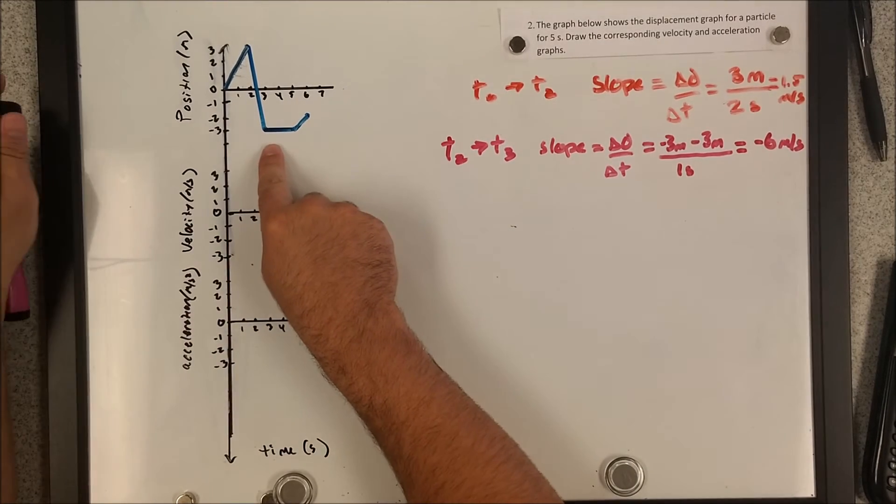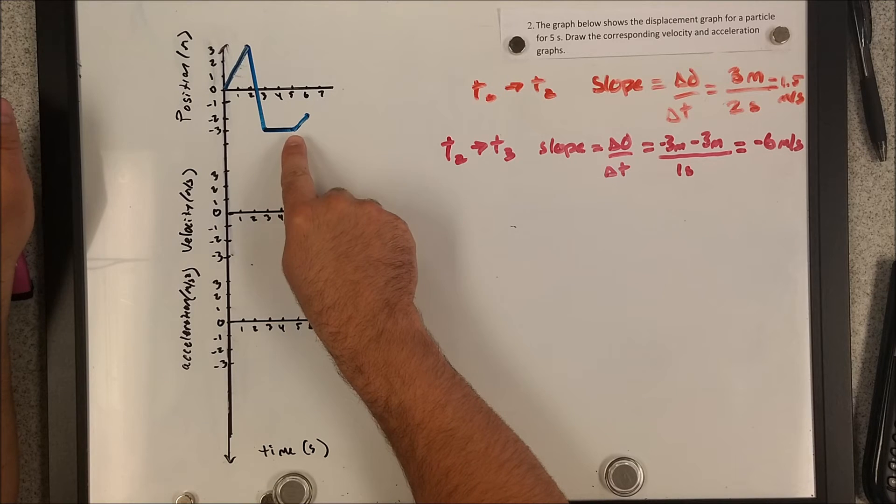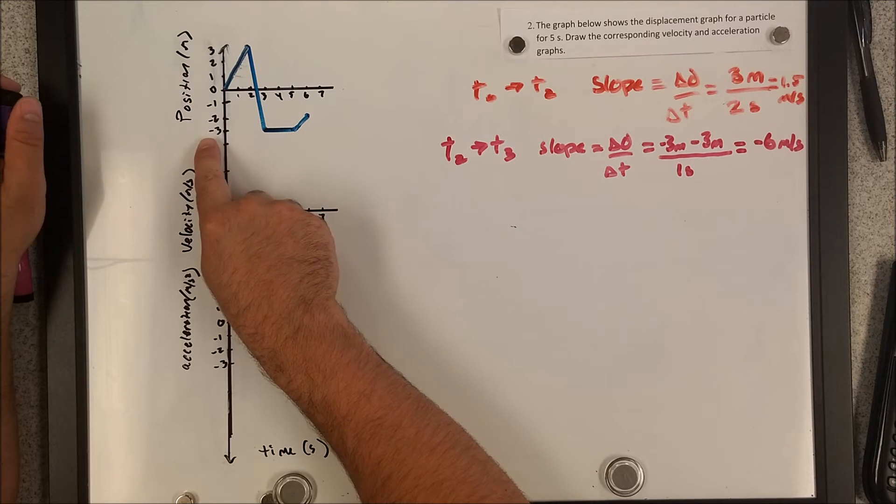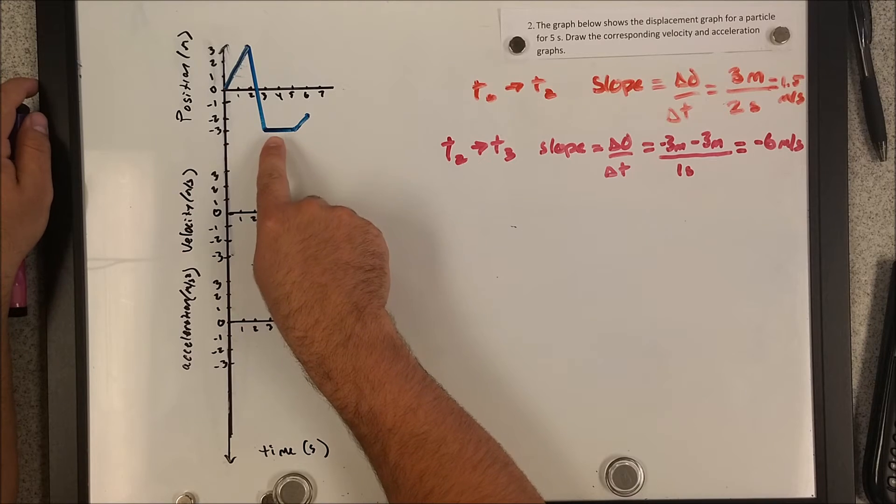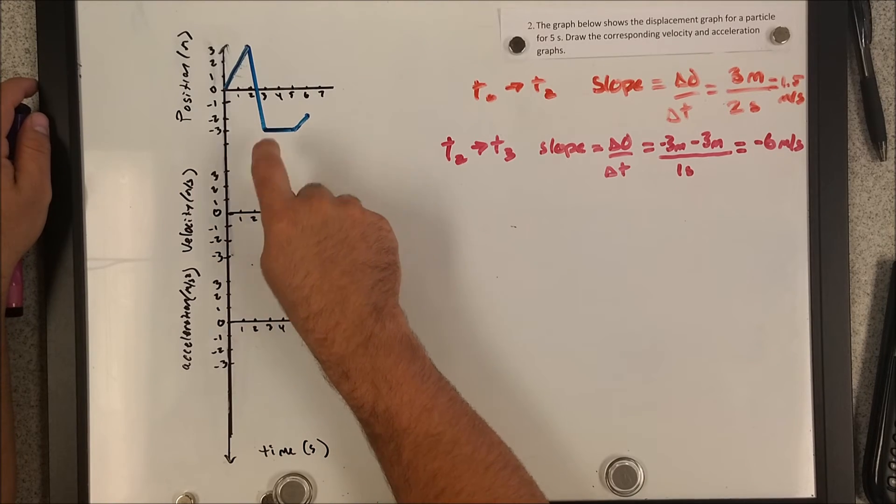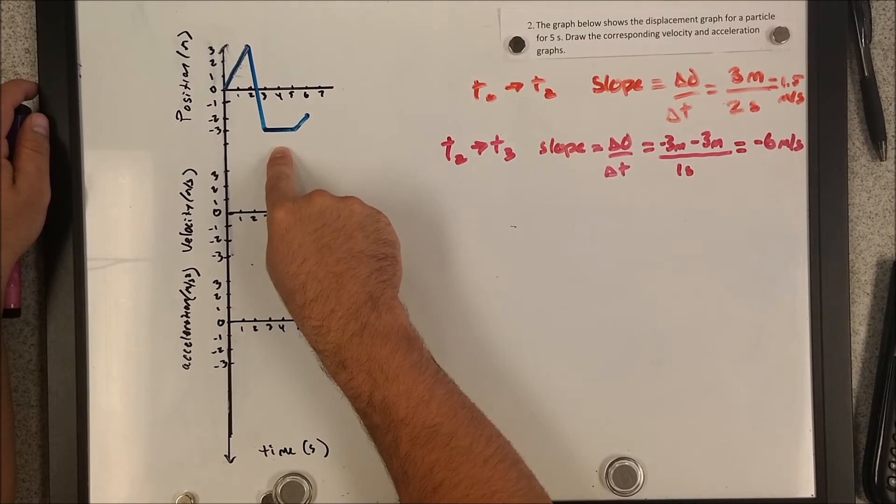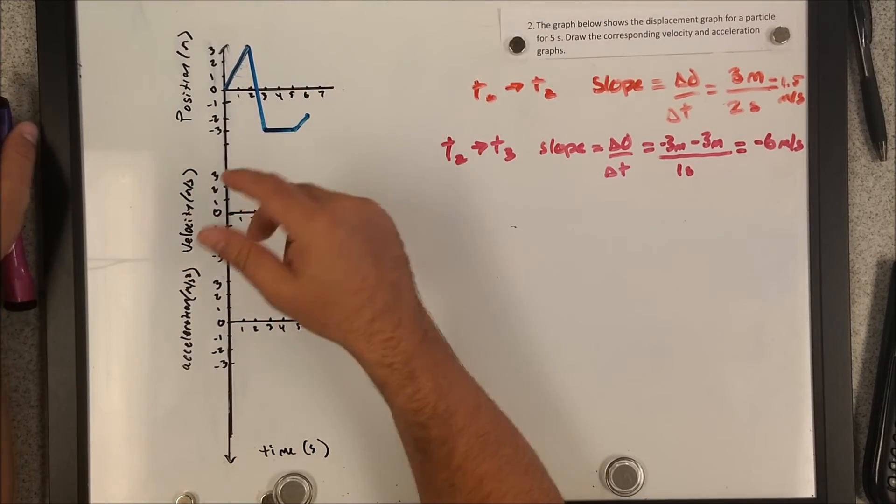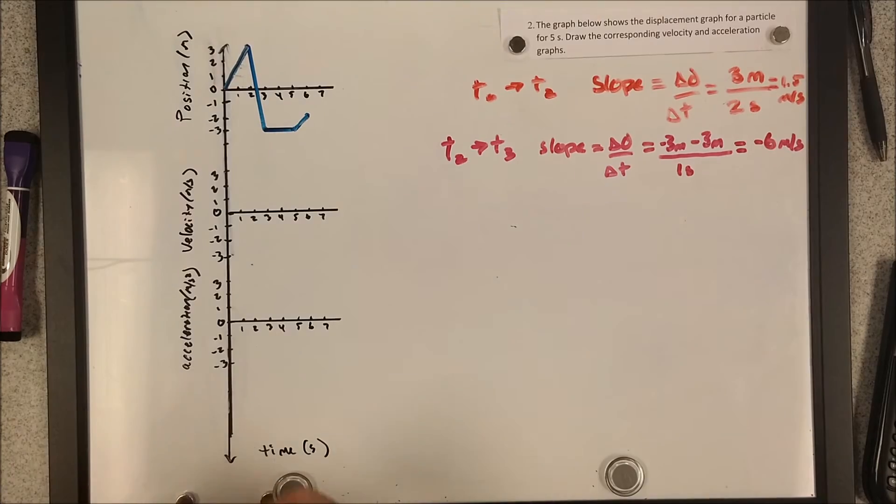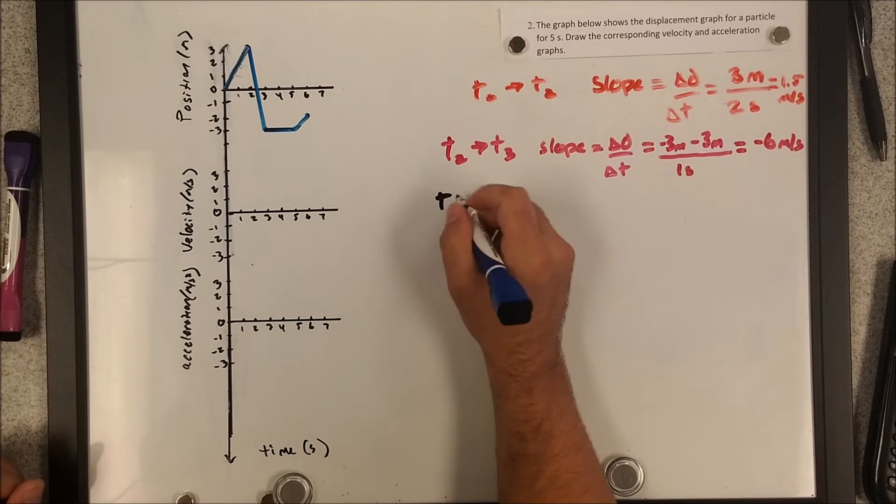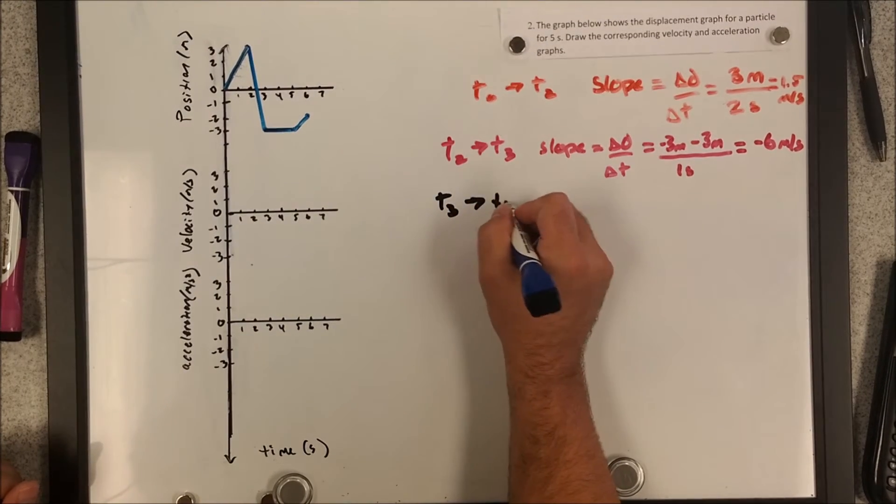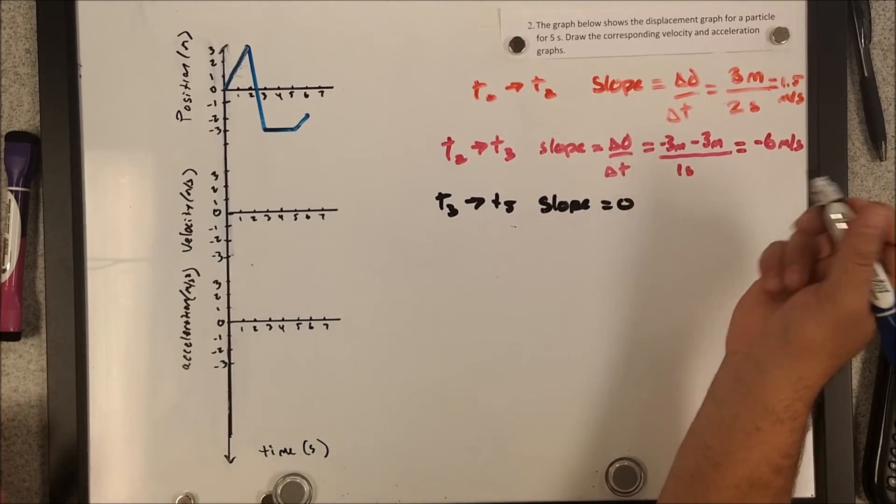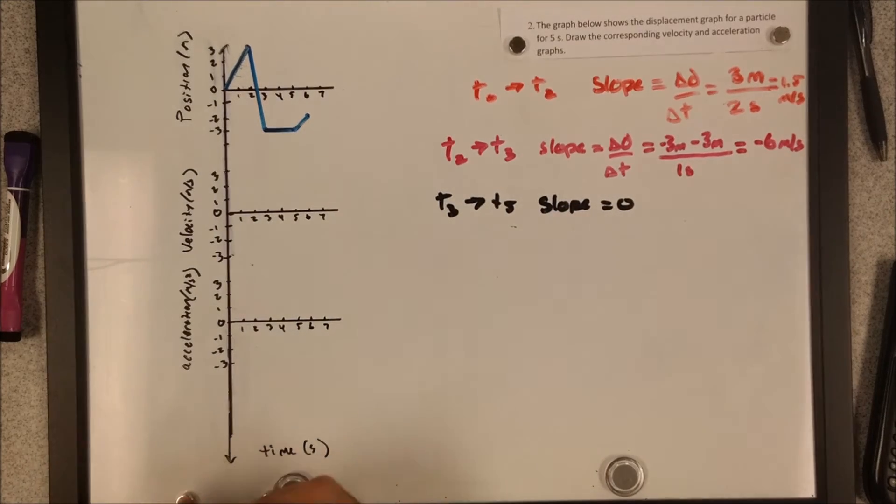Now let's look at segment three to five. You'll notice here that the position isn't changing, which means the object isn't going anywhere, which means the velocity is zero. And you can tell the velocity is zero just by looking at the slope. There's zero slope there. It's a horizontal line. So from t equals three to t equals five, slope equals zero. So the velocity is zero.